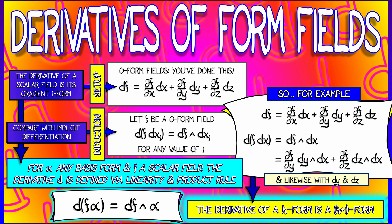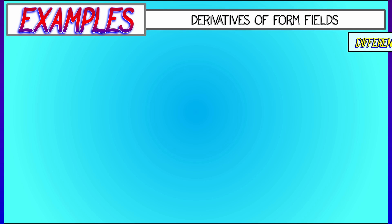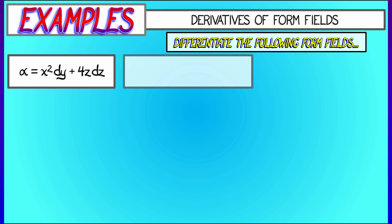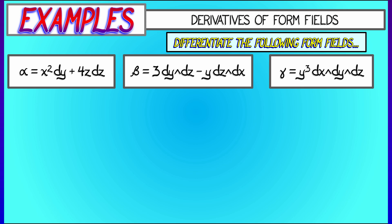Now, it takes a little while to get used to this unusual type of derivative, so let's do a bunch of examples. Let's say I give you the following forms. Alpha is a one-form field, given by x squared dy plus 4z dz. Beta is a two-form field, that is, 3 dy wedge dz minus y dz wedge dx, and gamma is the three-form field, y cubed dx wedge dy wedge dz.